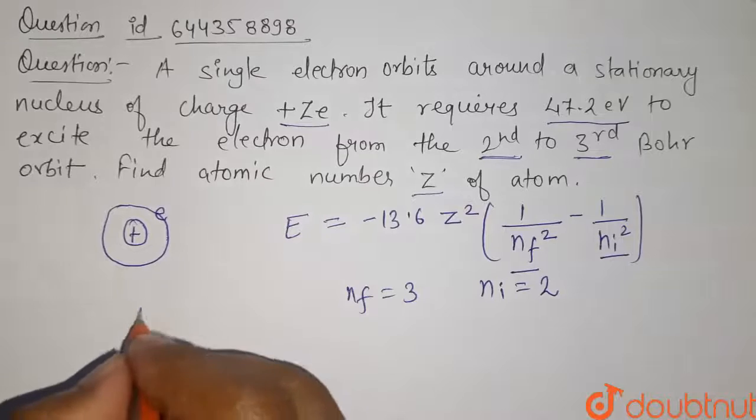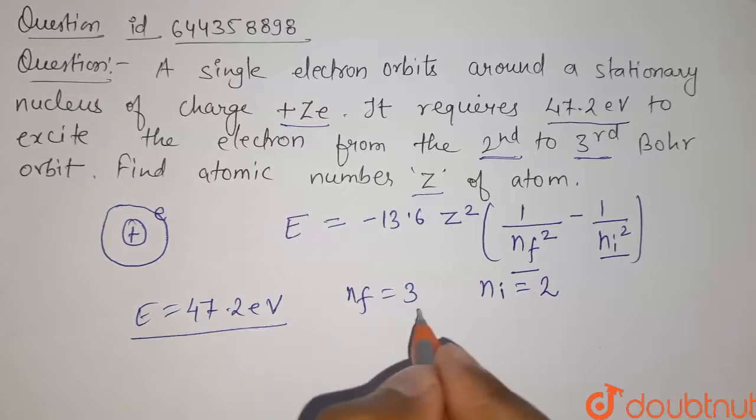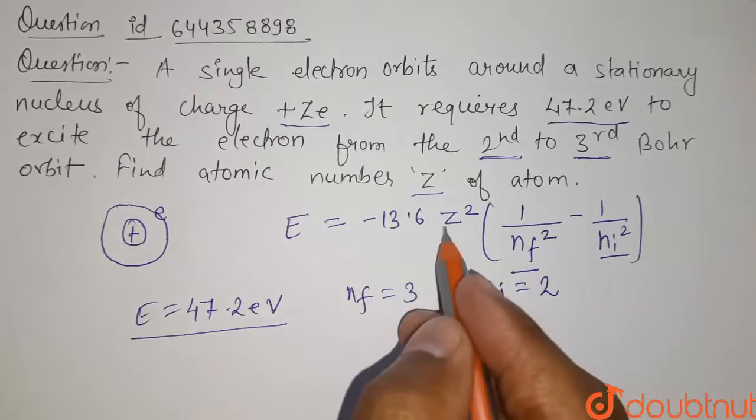And the energy given here is E equals to 47.2 electron volts. Now putting these values here, we have to find the value of Z.